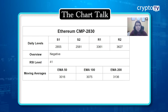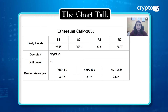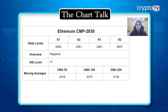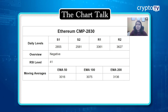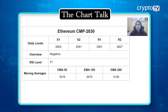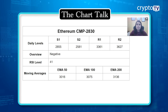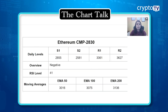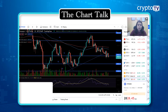As of now I have not changed the support and resistance levels. However, the price is trading very near to — and slightly below — the earlier support level. Since the market is open, let's see the closing price. If the closing price is below that level we need to change the levels; if not, we can go with the existing levels. Support 1 is at $2,855, Support 2 is at $2,581, Resistance 1 is at $3,361, and Resistance 2 is at $3,627.